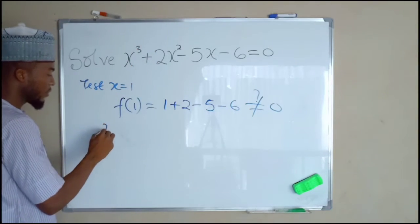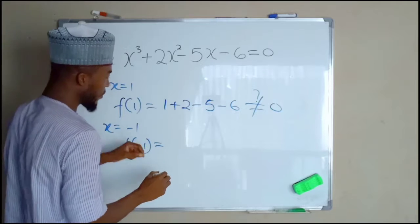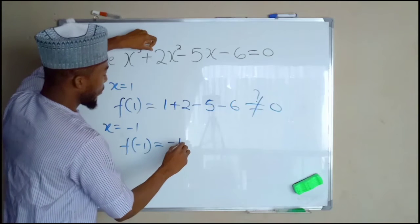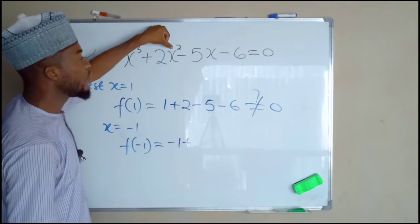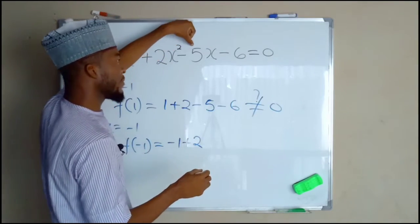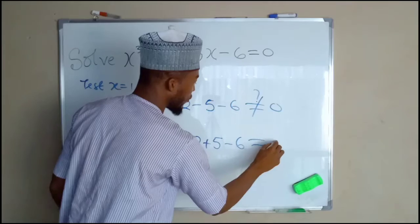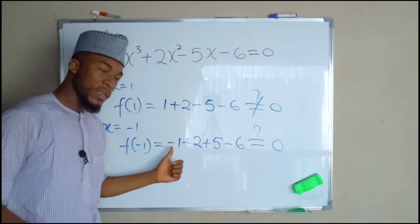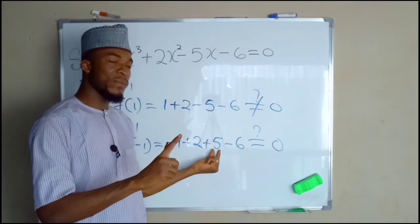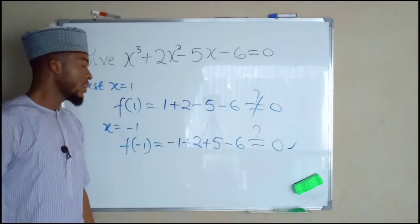Then we test for x equal to negative 1. Now, f of negative 1, this is equal to negative 1 to the power of 3 is still negative 1 plus negative 1 to the power of 2 is positive 1 times 2 is 2. Negative 1 times negative 1 times negative 5 is positive 5, then minus the constant, if this equal to 0. Alright, negative 1 positive 2 is positive 1. Positive 1 plus 5 is positive 6. 6 minus 6 is 0. Therefore, this satisfies the equation.